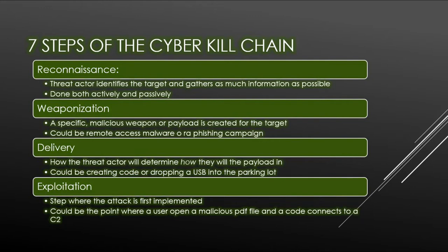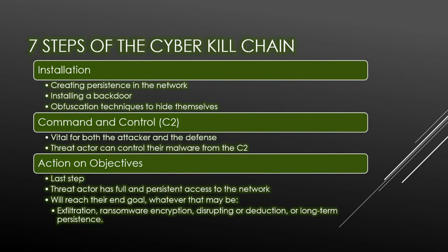Number three is delivery — how the threat actor determines how they will get the payload into the network, such as by dropping a USB in a parking lot. Number four is exploitation — the step where the attack is first implemented. It could be the point where a user opens a malicious PDF file in an email and a script creates a connection through an open RDP port to set up the threat actor's next actions. Number five is installation, where the threat actor creates persistence within the network through something like a backdoor and aims to find other endpoints to infect. During this time, obfuscation techniques such as encryption will be used to hide and mask their behaviors.